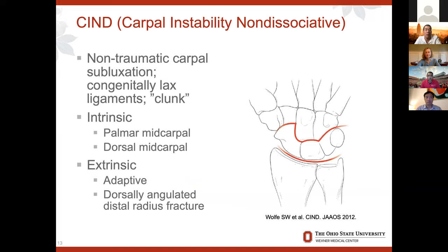Moving on to carpal instability non-dissociative — this is in the radiocarpal or midcarpal joints. Usually from non-traumatic carpal subluxation, usually congenitally lax ligaments, you get a clunk with motion. You can have intrinsic instability non-dissociative, which is palmar midcarpal or dorsal midcarpal. You can also have extrinsic, which is usually related to a dorsally angulated distal radius fracture — also referred to as adaptive. Those terms are interchangeable.